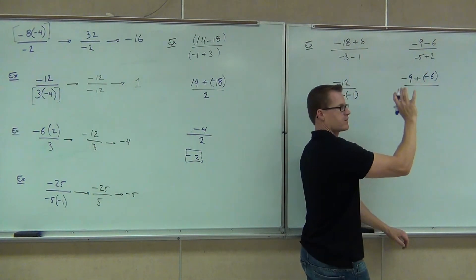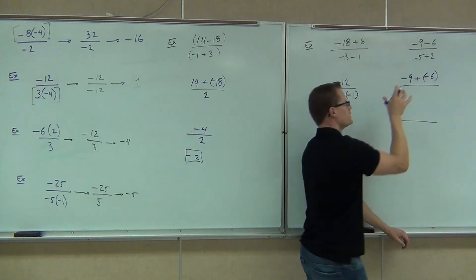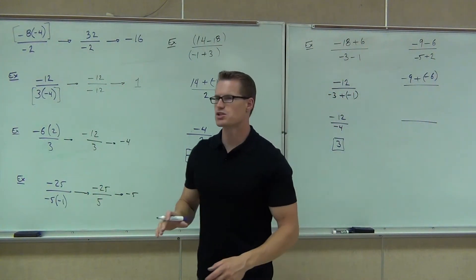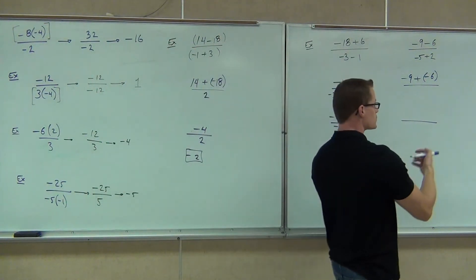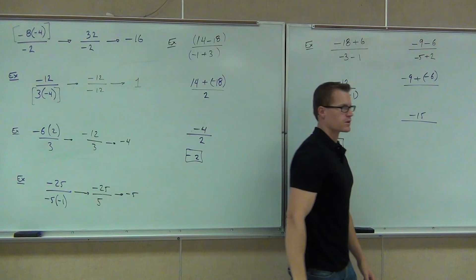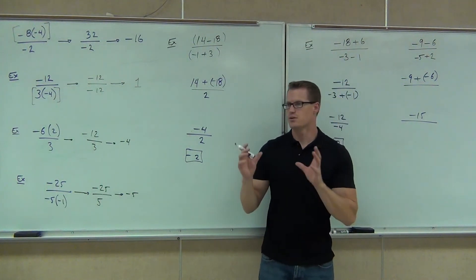I'll leave the bottom alone, I don't want to worry about it right now. Then I'm going to put this together, negative 9 plus negative 6, that's my addition rule with the same sign. I'm going to add them together and keep the common sign. I'm going to get how much? Negative 15. That's perfect. We've done the top. We have it down to one number.